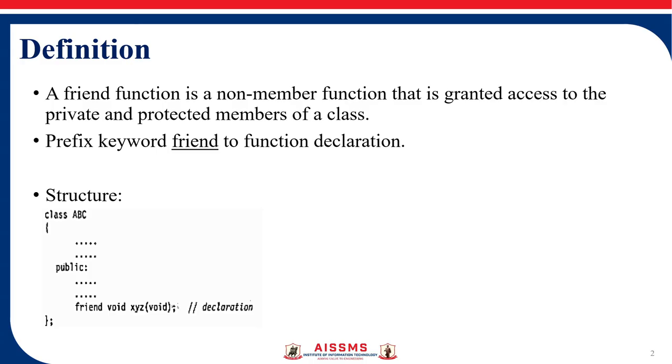Friend function is a non-member function that is granted access to private and protected members of a class. As we know that private members of any class cannot be accessed outside of that class and also we can access it only through objects of that class. But sometimes in some cases we need to give access to private members or we require to use those private members. So in such cases this friend function can be used.